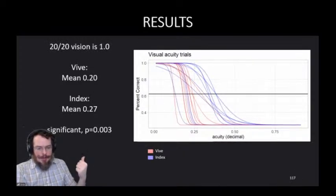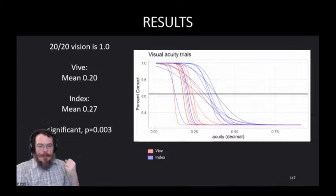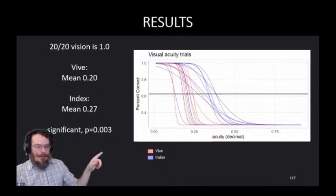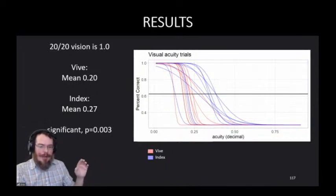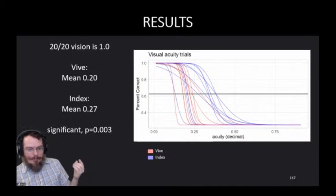We tested two headsets, the high resolution index and the lower resolution original Vive. All participants had corrected normal vision outside of the headset, an acuity of one here. Both headsets provided reduced visual acuity, with the lower resolution headset providing less. This is as expected and indicates that the test was working.